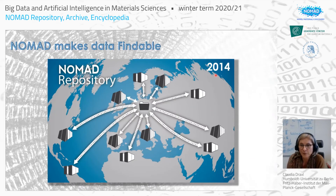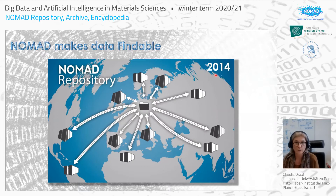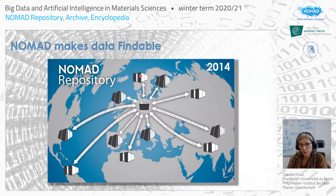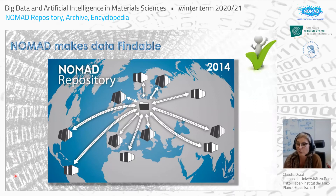Even in 2014 we had already put together a FAIR data infrastructure. Data uploaded are definitely findable, so we allow people to find this data — we can tick off the F in FAIR. We can also upload data, which means we already satisfy the Findable criterion from the start.